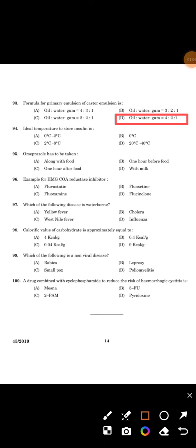Next question: ideal temperature to store insulin is? The answer is option C, 2 degrees to 8 degrees Celsius.